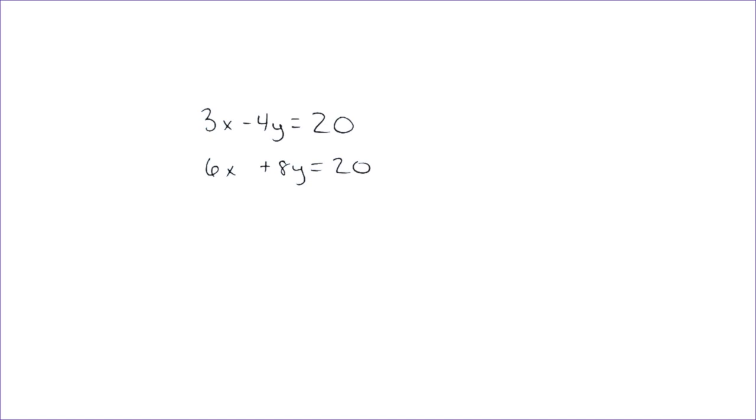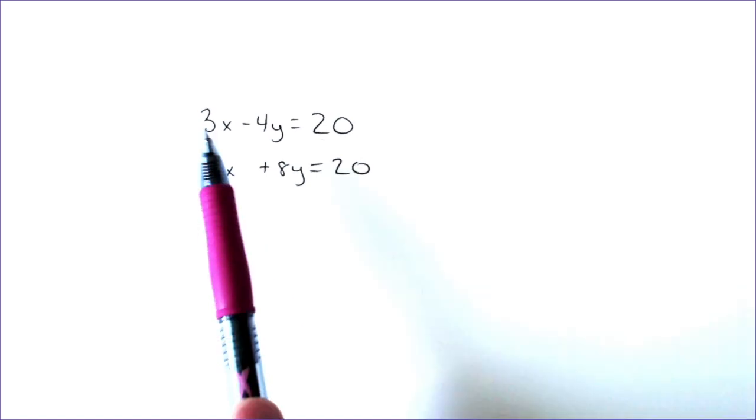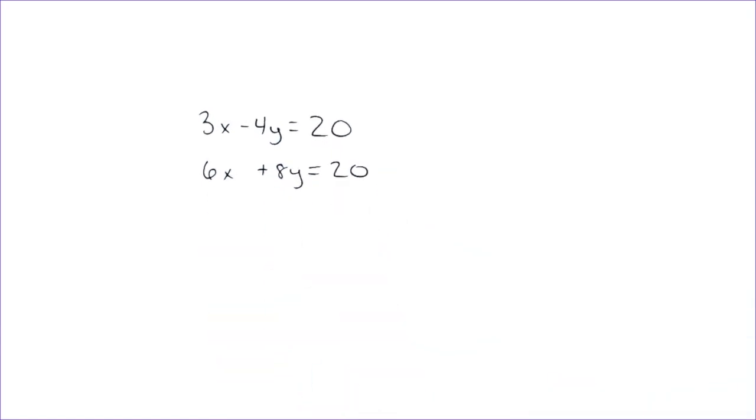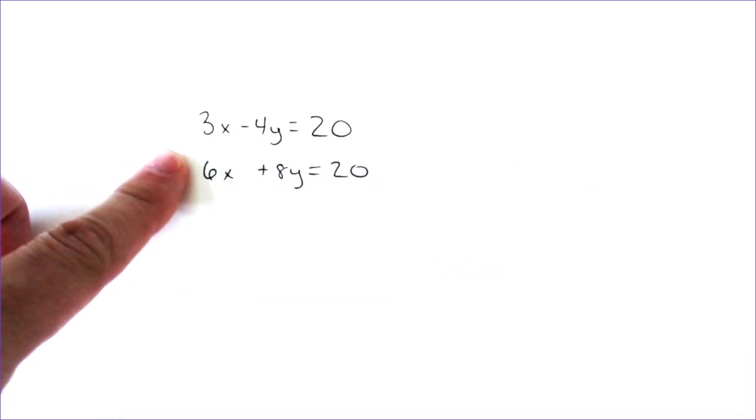On this next one, we'll look at the equations, and they look pretty similar. They got a 3, a 4, a 20, a 6, an 8, and a 20. So they're pretty close together, which could indicate that this could be infinitely many solutions or no solution. We're going to still solve it using the best method. In this case, the best method would be to use elimination.